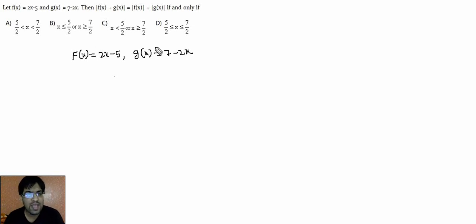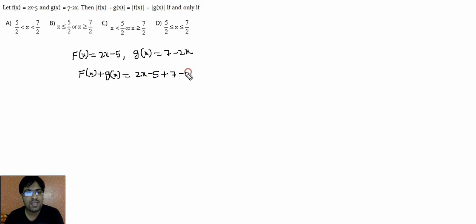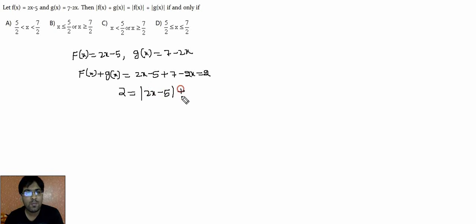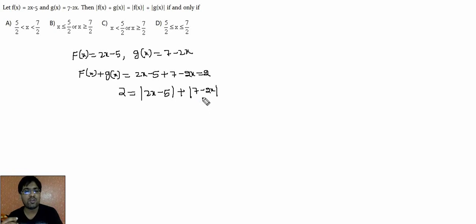We have f(x) and g(x). So f(x) + g(x) = (2x - 5) + (7 - 2x) = 2, and |2| = 2. So we need: 2 = |f(x)| + |g(x)|, that is 2 = |2x - 5| + |7 - 2x|. Now let's discuss how to solve this with the help of options.